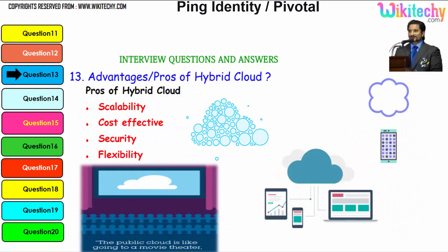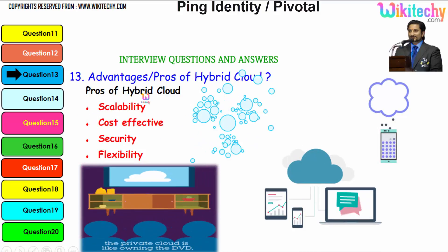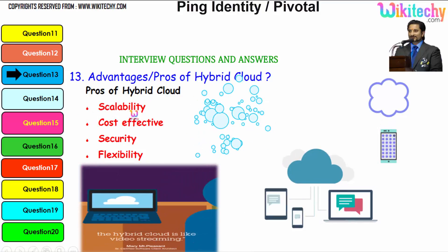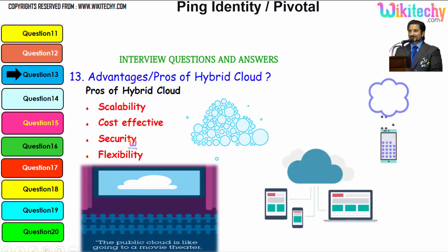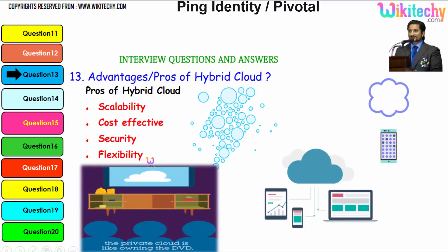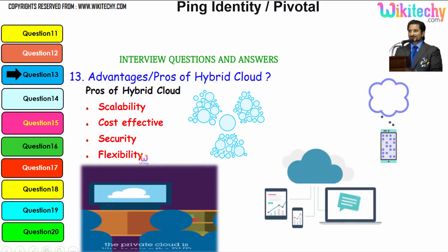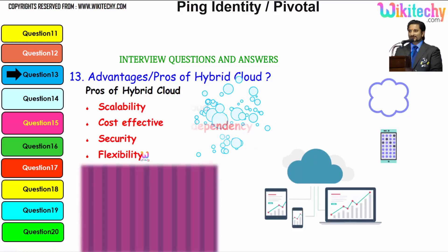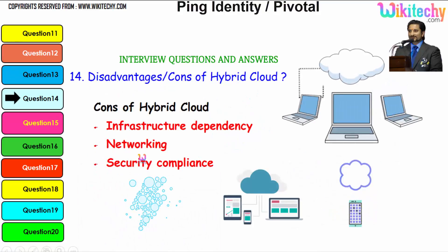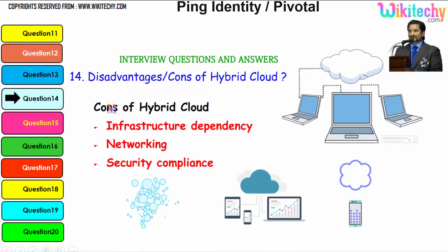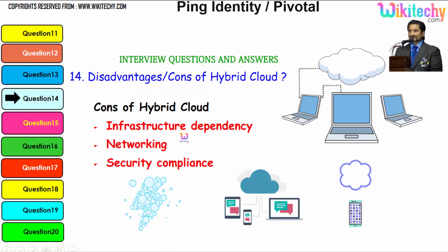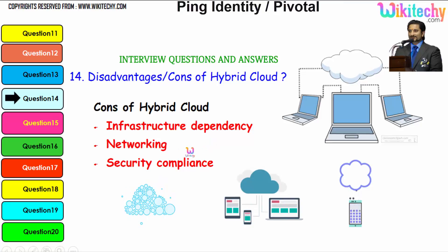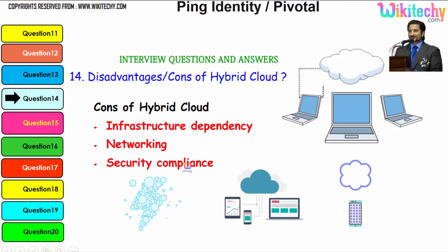Talking about the advantages of a hybrid cloud: it is scalable — you can extend it as much as you want. It is cost effective, secure, and provides more flexibility. These are the major advantages. The disadvantages include infrastructure dependencies — networking-wise you have a lot of dependencies, and security compliance also has a lot of dependencies.